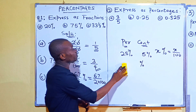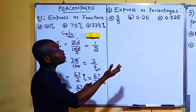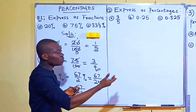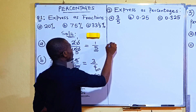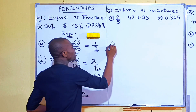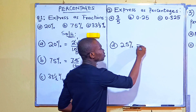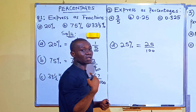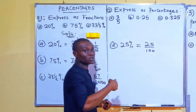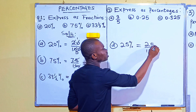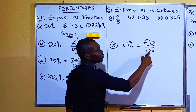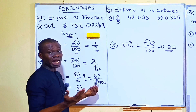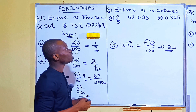Now example two asks us to change fractions and decimals back to percentages. Recall you can also be asked to change a percentage to a decimal. For example, to change 25% to a decimal: that's 25 over 100 — you divide by 100. Dividing by 100 means moving the decimal point back two places (because of the two zeros), so our answer is 0.25. That's how you change percentages to decimals.